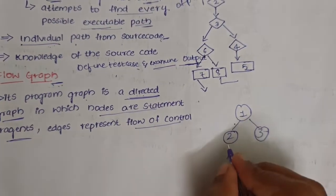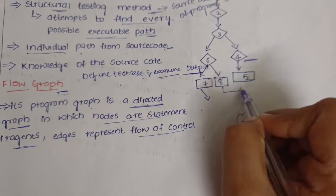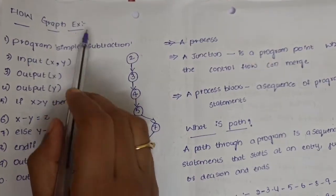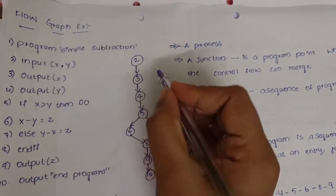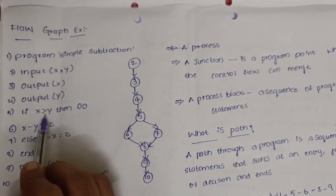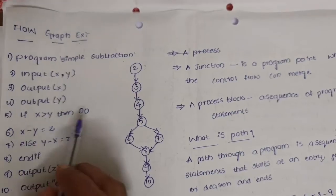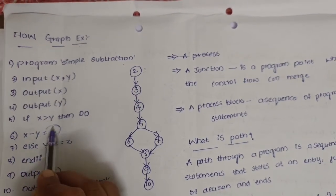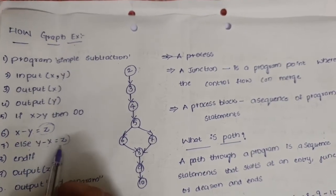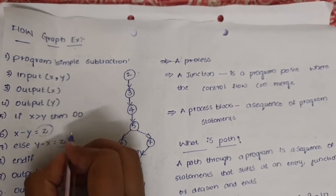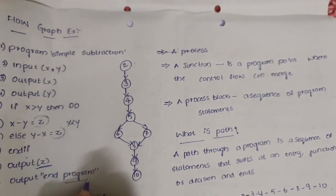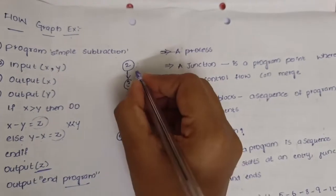Here we can see the program is a simple subtraction. First, we take two inputs x and y, and output x and output y. If x is greater than y, then x minus y equals z. If y minus x equals z, which is x less than y, output z and end the program.